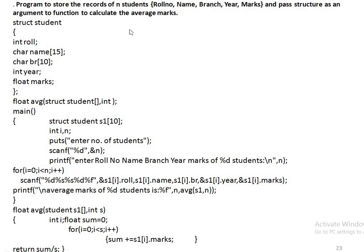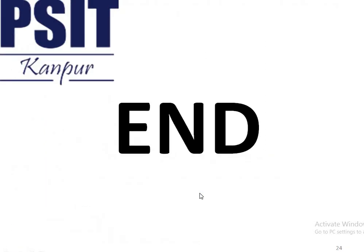Third program: store student records and calculate average marks using a function. A student structure is created. A function accepts the entire student structure array along with the size. All student information is entered, then the function is called — this is call-by-reference since the array name s1 is passed. Inside the function, the summation of all students' marks (s1[0], s1[1], s1[2], etc.) is calculated, divided by the total number of students, and the result is returned and printed. This concludes the lecture.